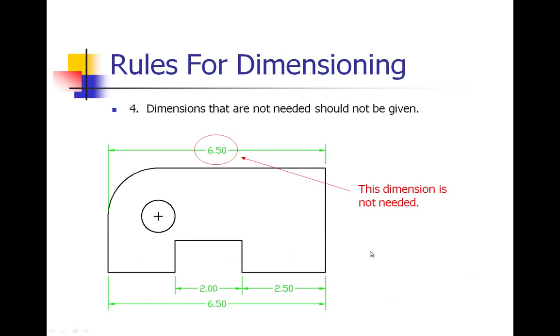Number four: dimensions that are not needed should not be given. This is for aesthetics and readability. We don't want a whole bunch of dimensions that we don't even need because it crowds the drawing. With this particular one, 6.50, I already have that measurement down here at the bottom, so I don't need to put that measurement again.